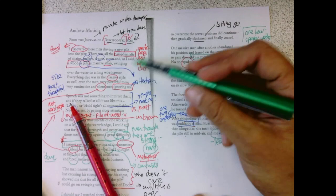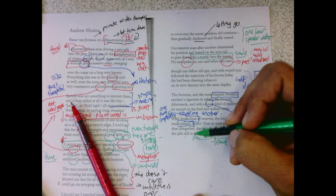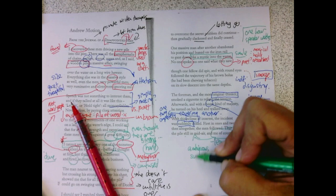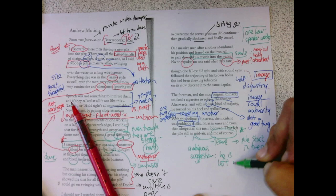But he's almost, by the way grammatically it works, that pile still in midair, and me, of course. That left the pile still in midair, and me, of course. There's an ambiguous suggestion he is left in midair, too.